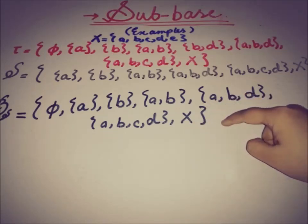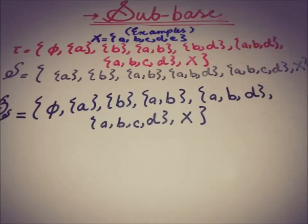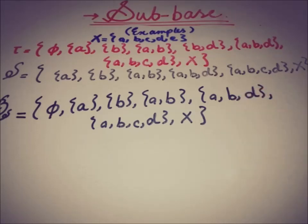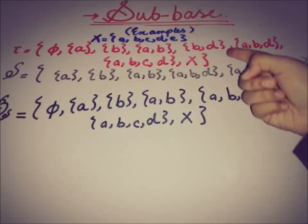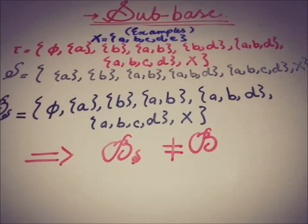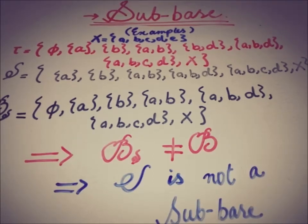Now we compare the elements of B_s with the elements of topology tau. The set BD is missing from B_s but is present in tau. We check whether BD can be formed by taking the union of elements of B_s — but it is not possible, as no combination of elements in B_s produces BD.